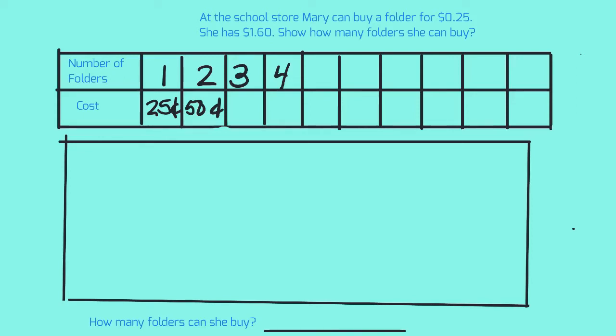Okay, on this next problem it says at the school store Mary can buy a folder for 25 cents. She has a dollar sixty. Show how many folders she can buy. We're gonna work this the same way we did before.